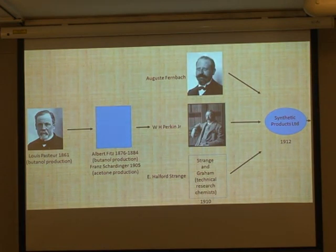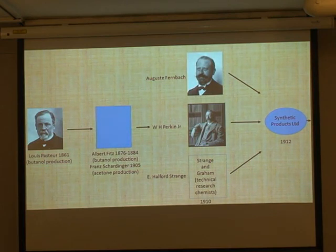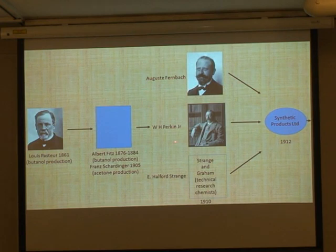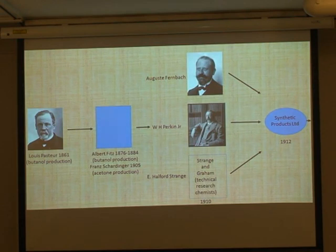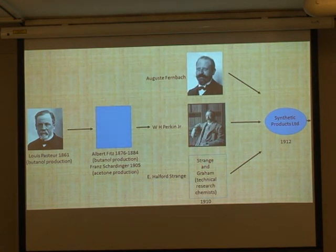If you look at other examples of that - when Fleming went on holiday and came back and discovered penicillin - that's a lesson: never do the washing up before you go home. They needed butadiene, and to get butadiene in large quantities they came across August Fernbach, who was head of the fermentation department at the Institut Pasteur in Paris. He had a fermentation process which produced butanol, which could be converted to butadiene and polymerised to produce synthetic rubber.